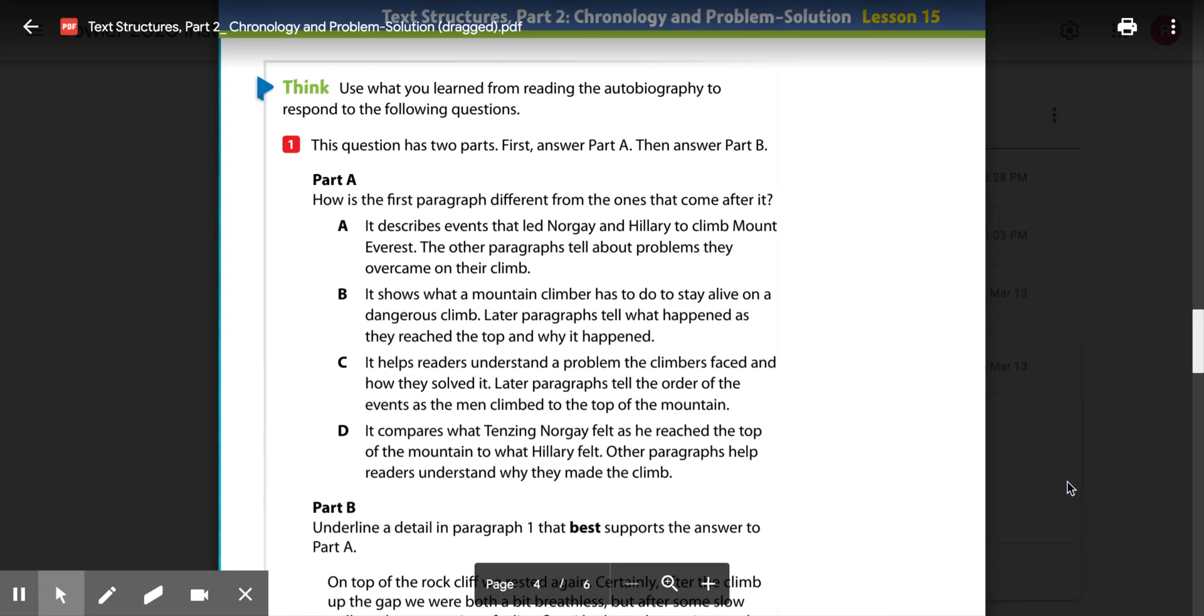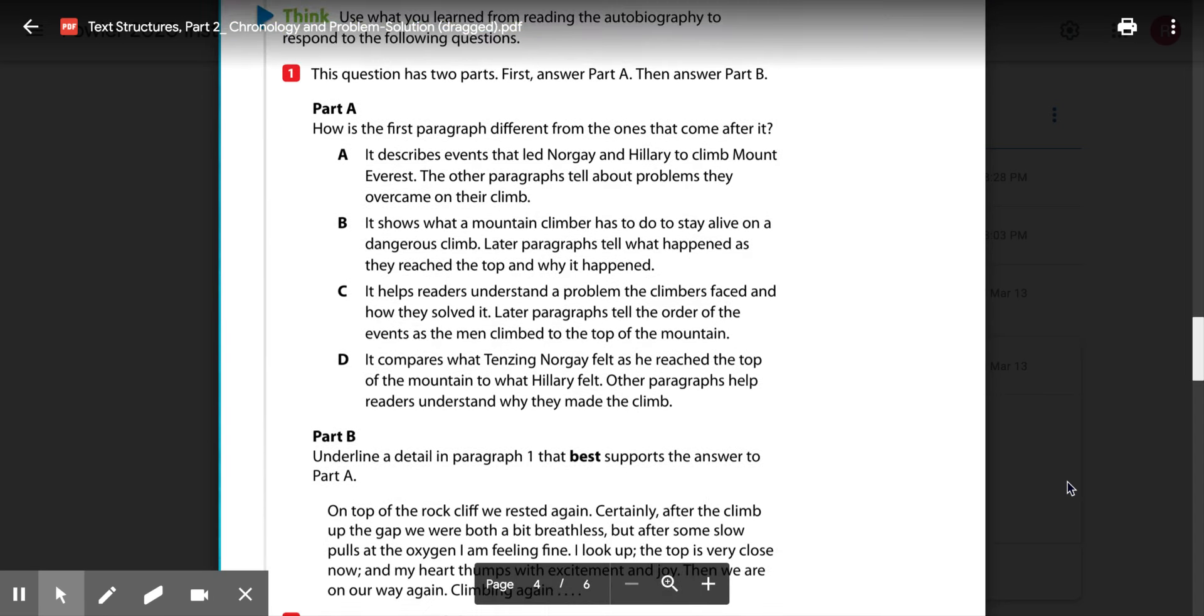B, it shows what a mountain climber has to do to stay alive on a dangerous climb, later paragraphs tell what happens as they reach the top and why it happened, C, it helps readers understand a problem the climbers face and how they solved it, later paragraphs tell the order of the events as the man climbed to the top of the mountain,